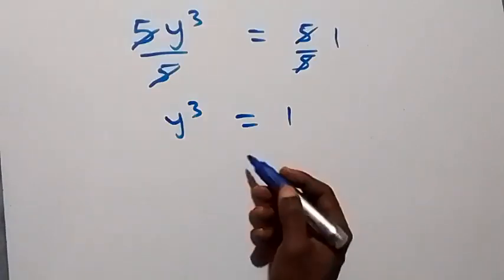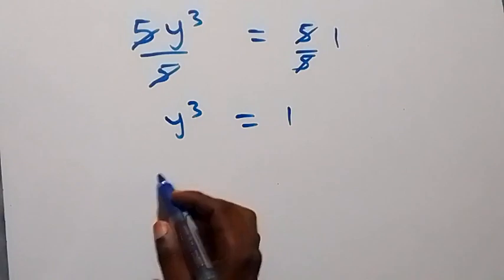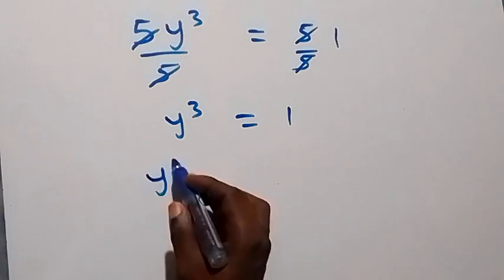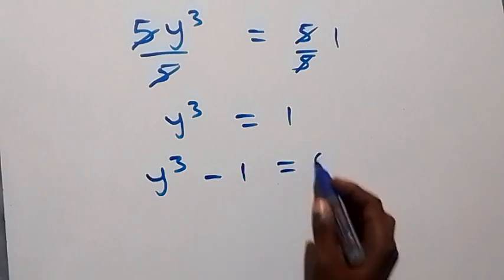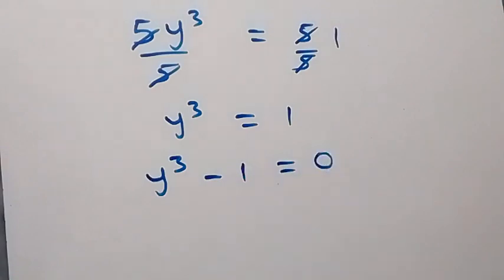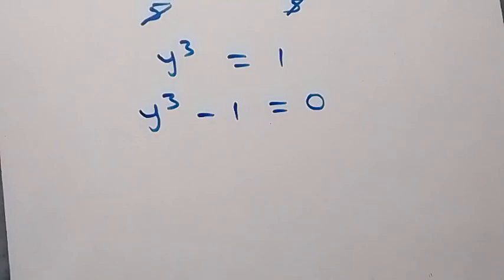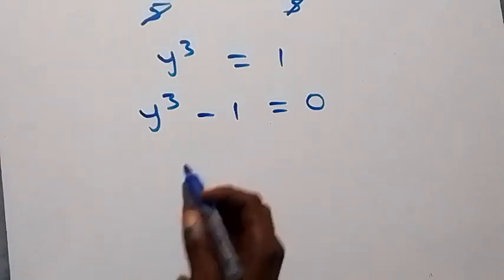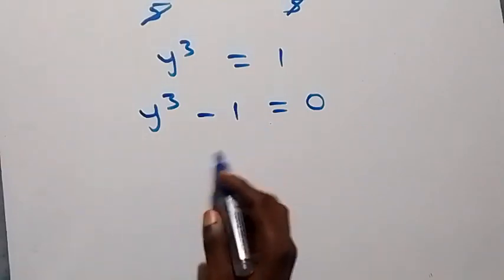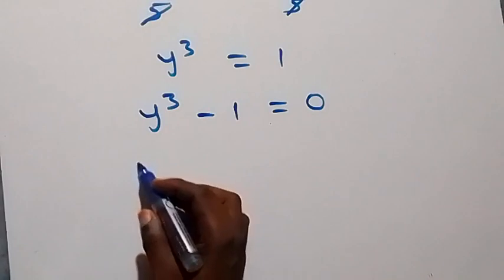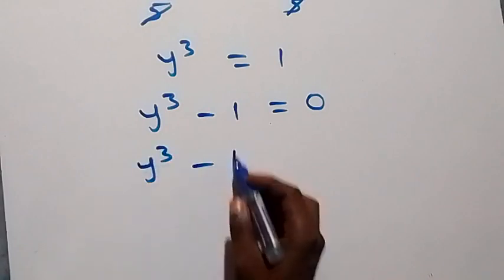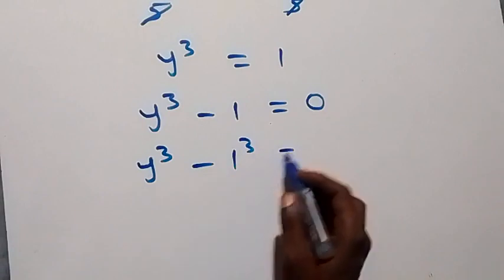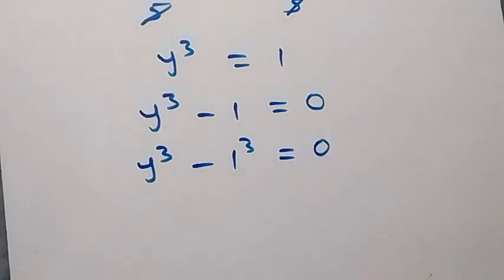And from here, we can take 1 to this side, then we have y raised to power 3 minus 1 equals to 0. Then also, we can write 1 as 1 raised to power 3, so we have y raised to power 3 minus 1 raised to power 3 equals to 0.